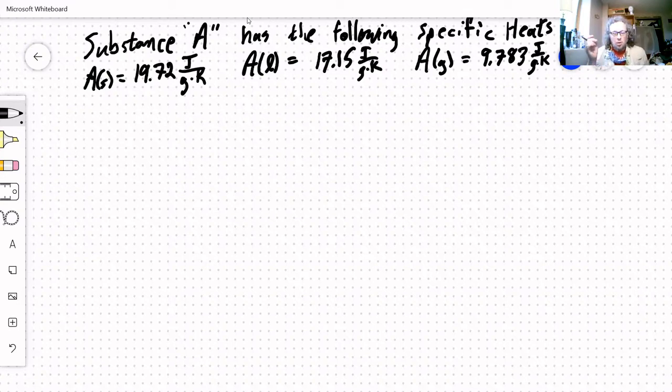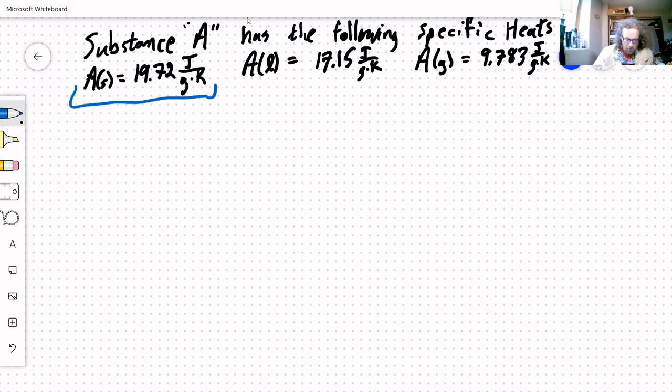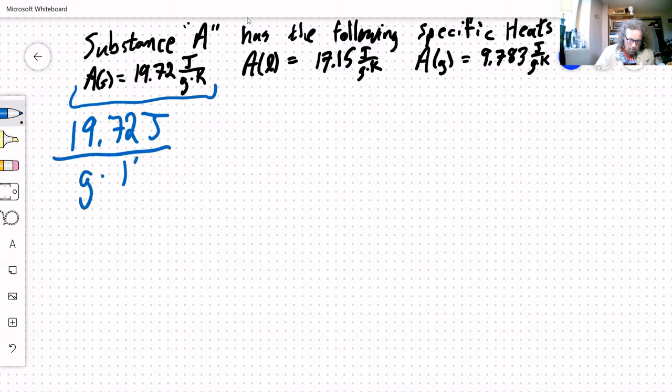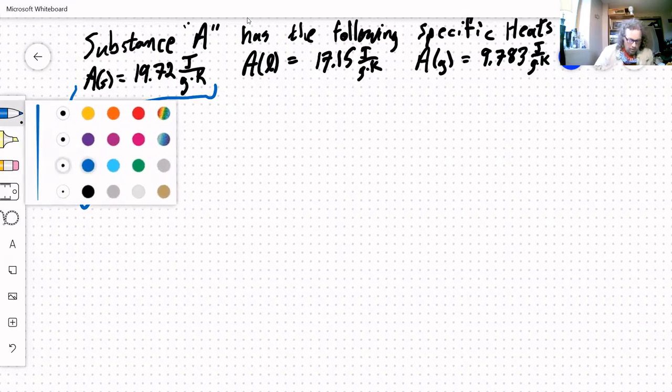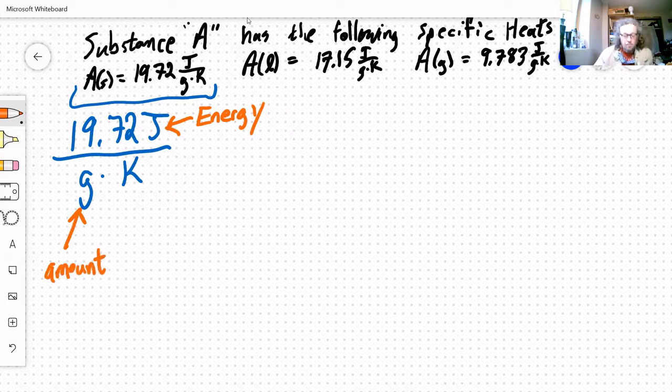Now, before we even do a problem, before we even pull those numbers in, let's take a minute to just figure out what those units mean. Because I think that's a place where people often stumble, often run into trouble. So figuring out what they mean, let's just take a look at this one. So 19.72 joules per gram Kelvin. Joules is an energy unit. Grams is an amount unit. And Kelvin is, in this case, a change in temperature units.